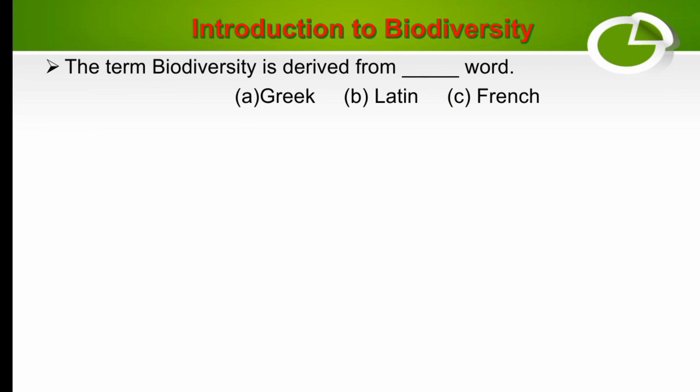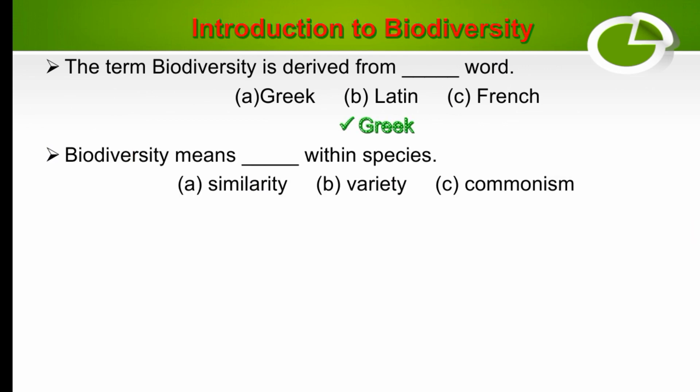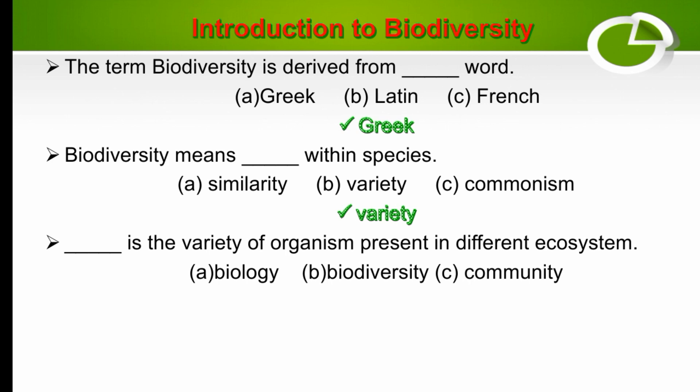The term biodiversity is derived from the Greek word. Biodiversity means variety within species. The right option is variety — biodiversity is the variety of organisms present in different ecosystems.